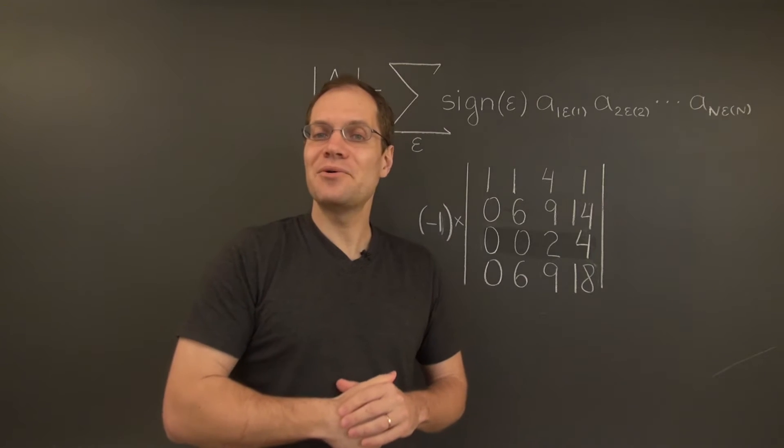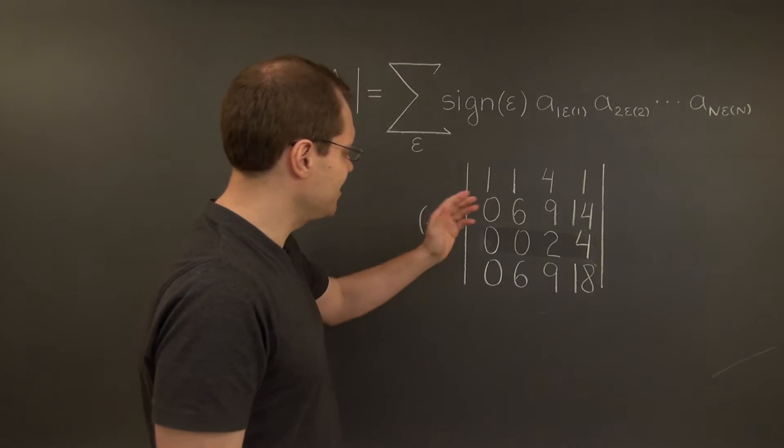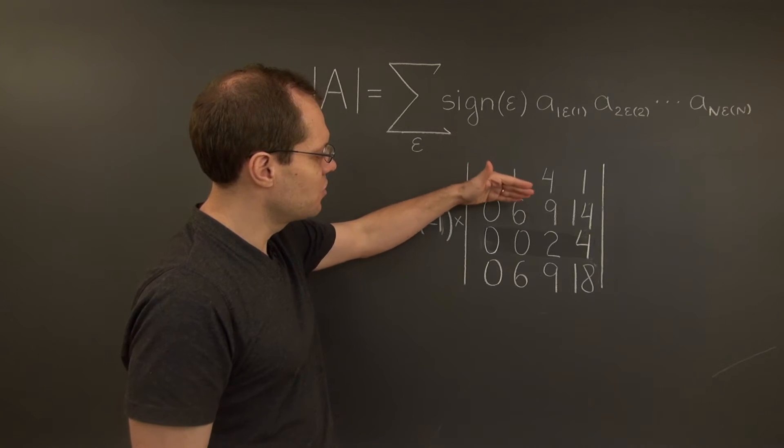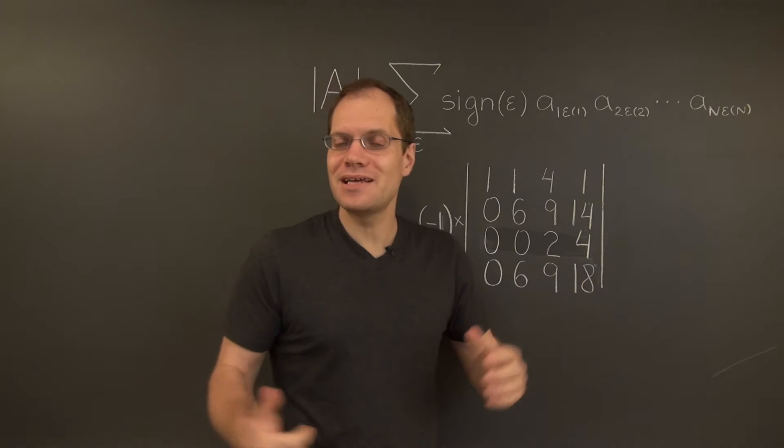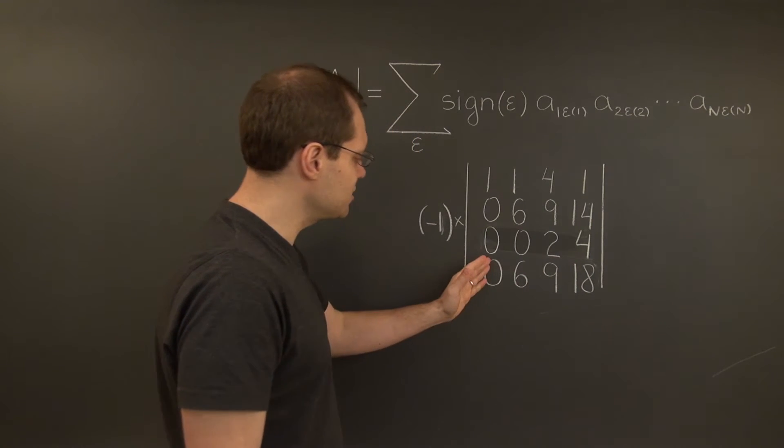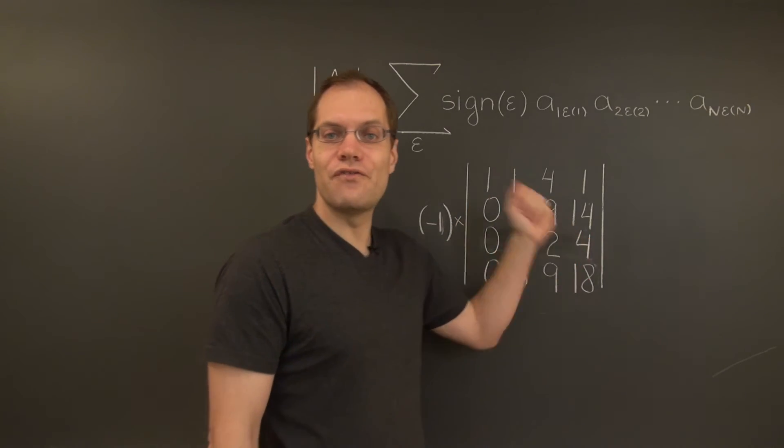Okay, and now we can proceed according to the standard Gaussian elimination scheme. And the next step is subtracting one of the second row from the last. And that actually eliminates two of the entries at the same time. And in the last row, we end up with 0, 0, 0, 4.